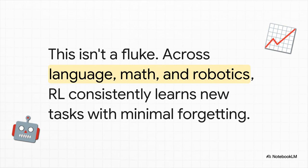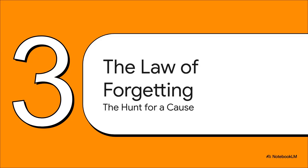And get this, this wasn't just a one-time thing. The paper shows this pattern popping up again and again, across totally different areas. From language models learning new facts, to robotics learning new physical tasks. It seems to be a fundamental truth, RL just learns without this severe forgetting problem. So we have a clear pattern. A culprit who forgets less, but we still don't have a motive. We don't know why.